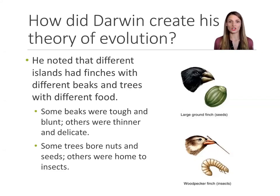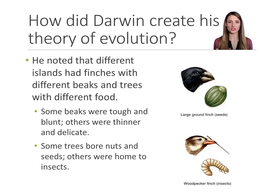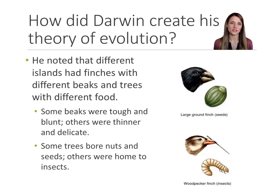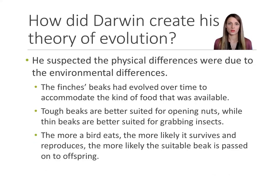Some finches had short, blunted, tough, strong beaks. On some of the other islands, the finches' beaks were longer, thinner, weaker. He also took notes about the environment. On some of the islands, the trees had nuts, fruits, and other vegetation. On the other islands, there weren't as many trees, but there were plenty of insects, worms, and grubs. He reasoned that the physical differences between the finches' beaks were related to the differences in their homes, in their environment.